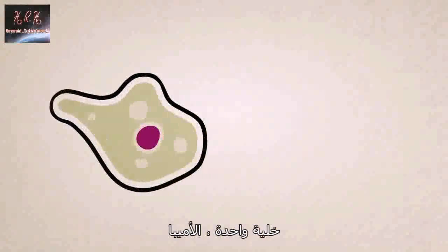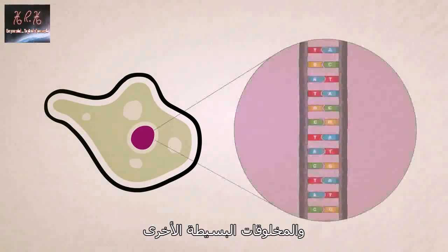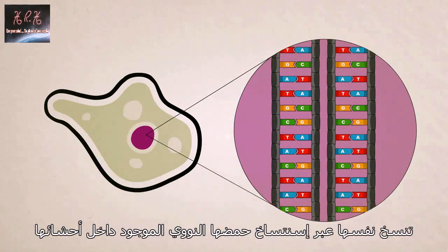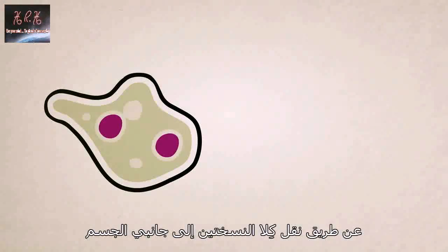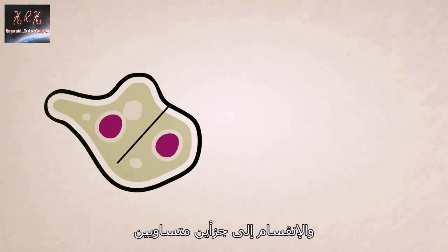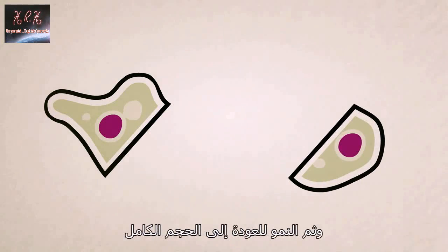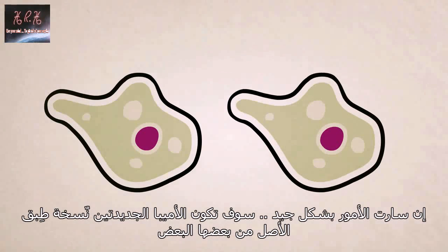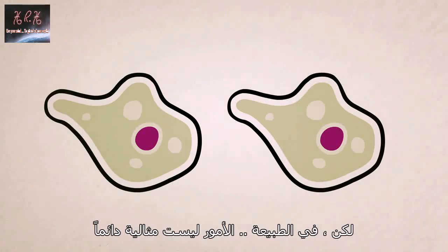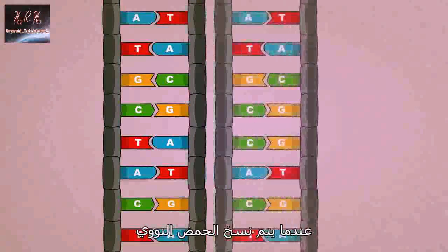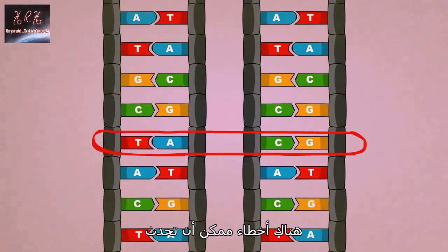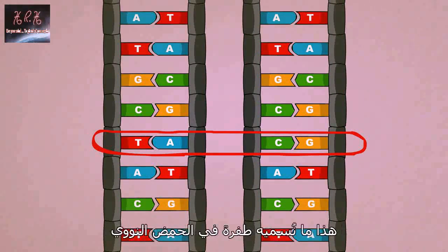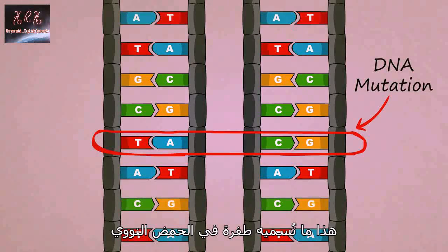Single-celled amoebas and other simple creatures reproduce by copying their DNA inside their guts, moving both copies to either side of their body, splitting in two right down the middle, and then growing back to full size. If all goes well, the two new amoebas will be exact copies of each other, but in nature things aren't always perfect. When DNA is being copied, errors can occur which modify the DNA code. This is what we call a DNA mutation.